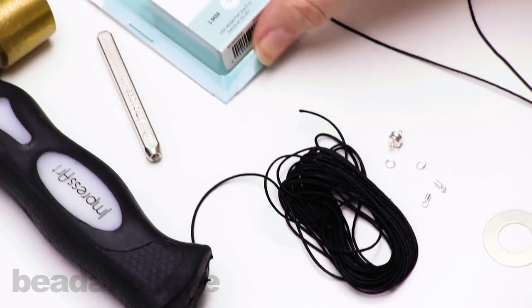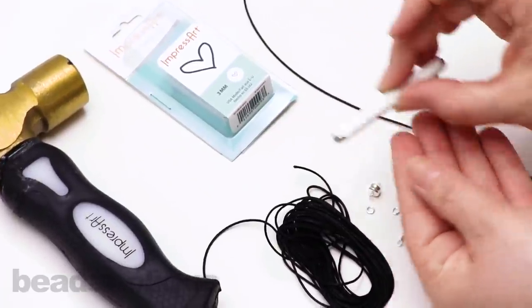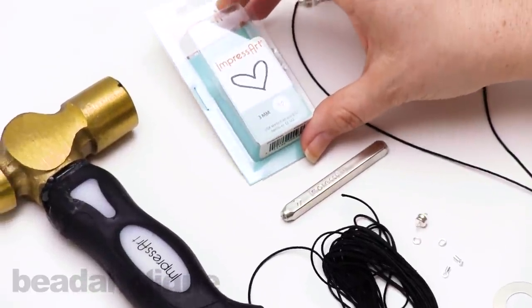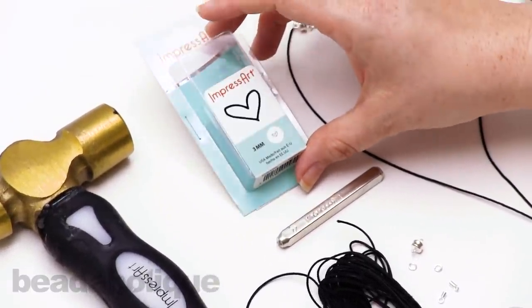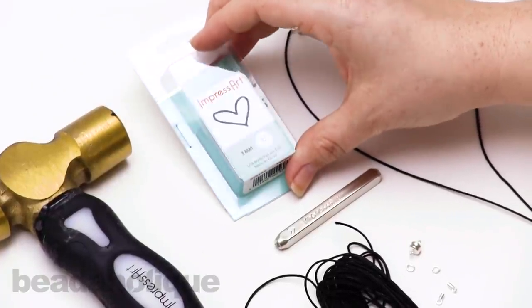And then you'll need whichever ImpressArt stampings that you want to use. Today I'm going to be using that little three millimeter heart, but you could also use various letters or various other shapes. You just want to make sure that whatever stamping you're using fits in the size of the donut stamping blank that you have.